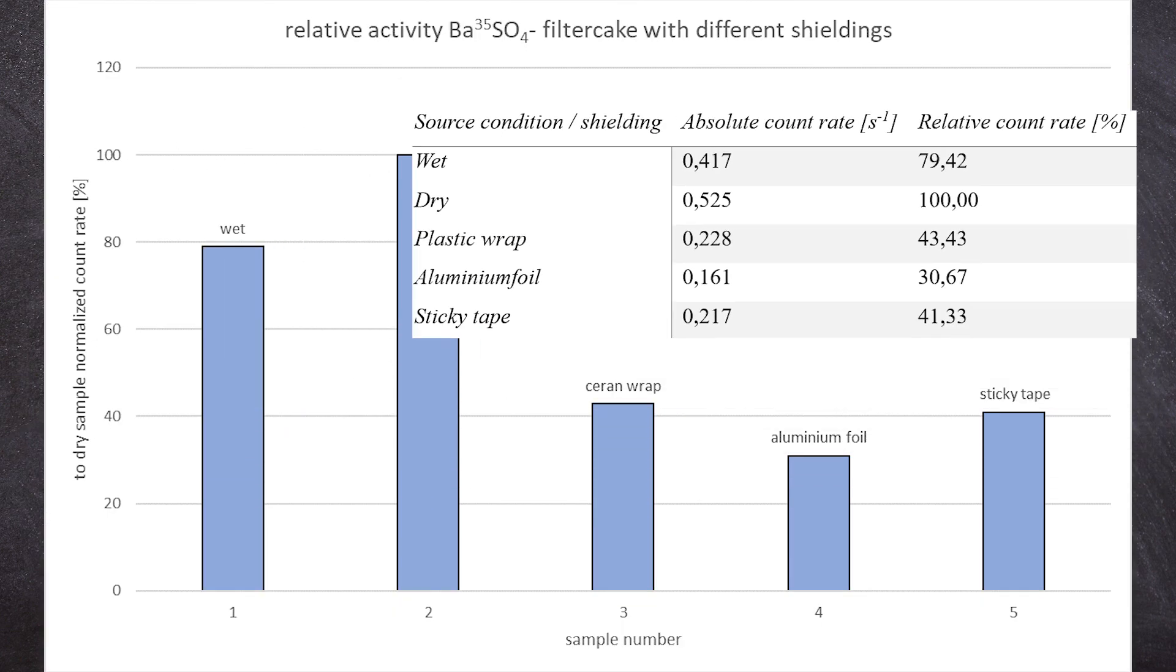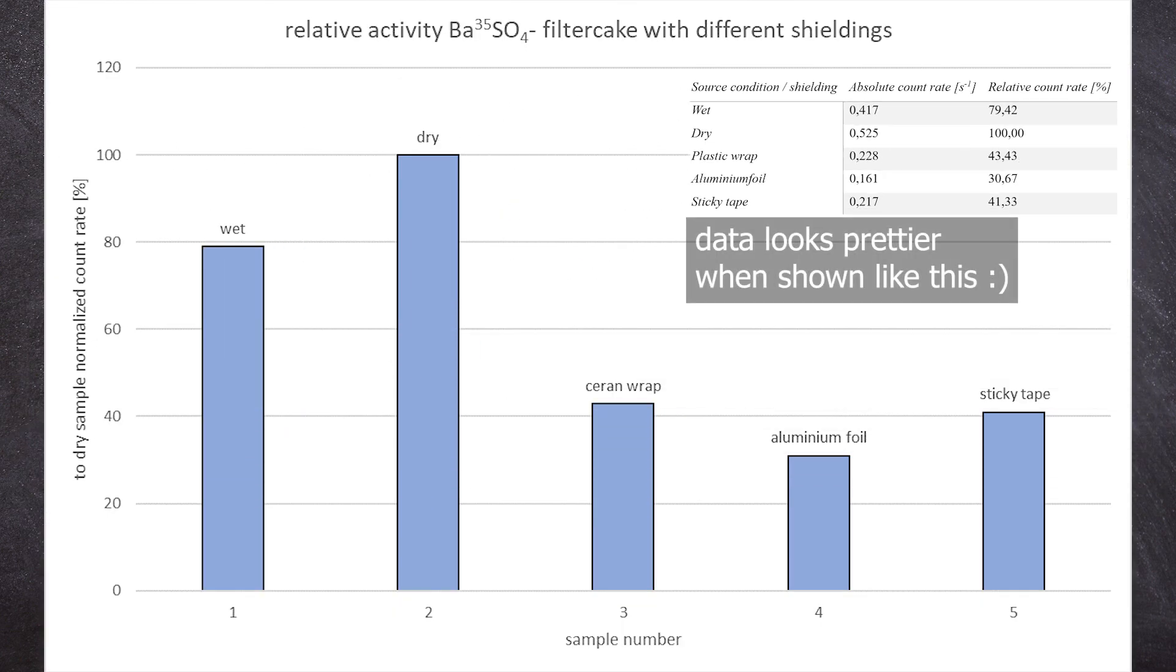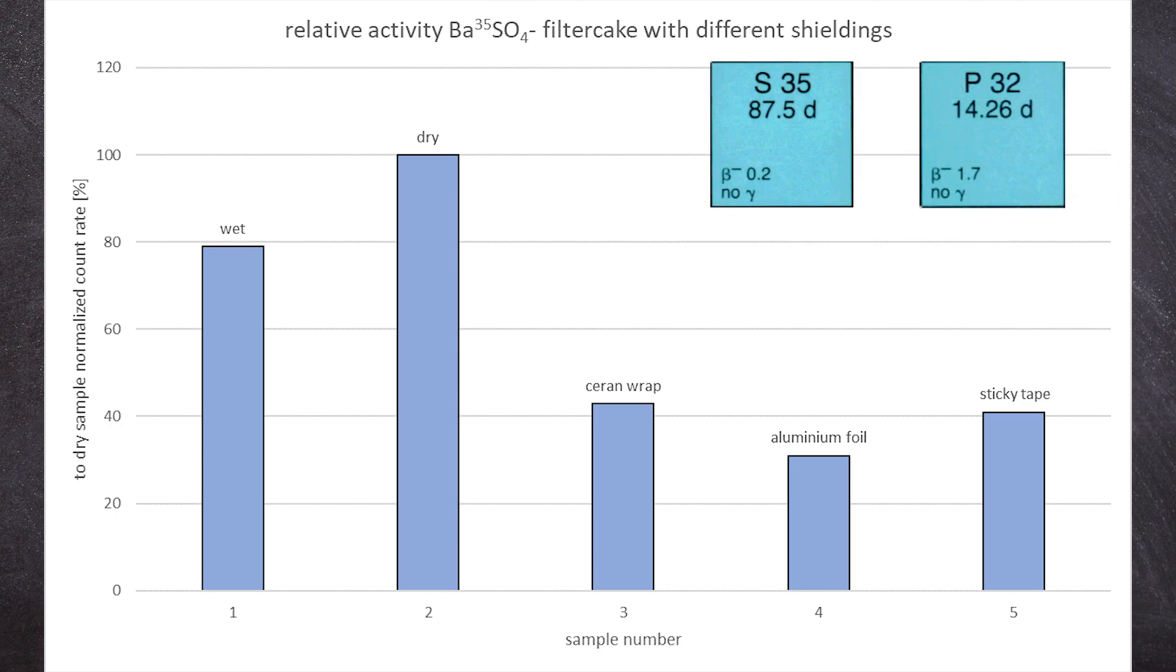We observed that water has a shielding effect. This is the reason why we used sulfur-35 instead of phosphorus-32. Both are beta only emitters, but sulfur-35 emits very low beta energies, so water significantly shields these low energy betas. This explains the difference in counting rates between the dry and the wet sample.